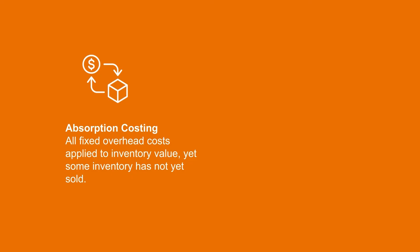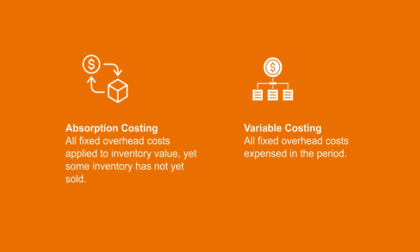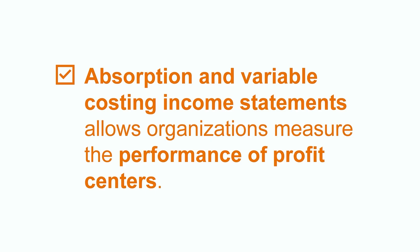The main reason for this difference is that under the absorption costing method, the fixed overhead costs have been applied to the inventory value, and some of this inventory has not yet been sold. While under the variable costing method, all of these fixed costs have been expensed in this period. Profit centers can be evaluated under either approach. However, under the variable costing approach, it may be more effective to evaluate a manager's performance, because the fixed overhead costs that they may not have as much control over are kept segregated from the product costs and therefore do not impact the gross margin of the profit center. Remember, in order for organizations to be successful in the long run, they need an effective way to measure the performance of their profit centers. Absorption and variable costing income statements give them the opportunity to dig deeper into their operating results and make better long-term business decisions.